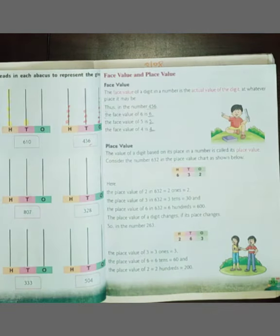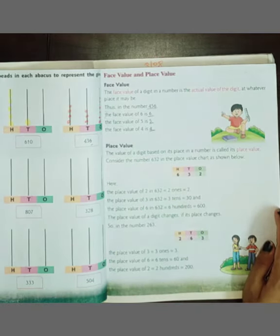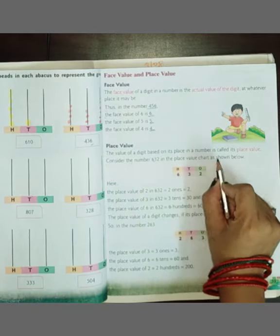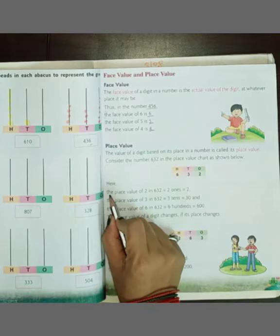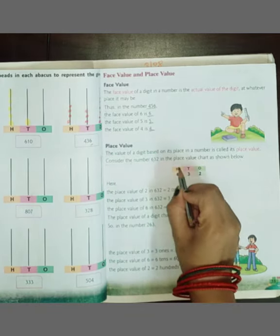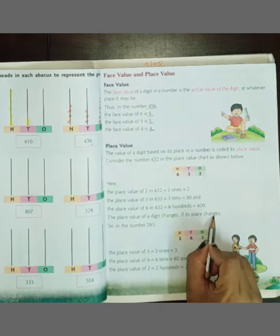Okay class, so now place value. The value of a digit based on its place in a number is called place value. Consider the number 632 in the place value chart as shown below. Here the place value of 2 is ones, 3 is tens, and 6 is hundreds. The place value of digit changes if its place changes.